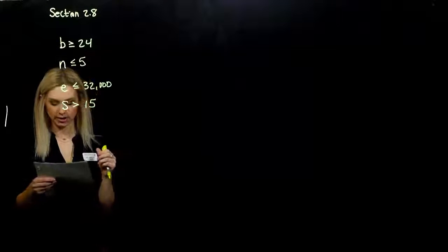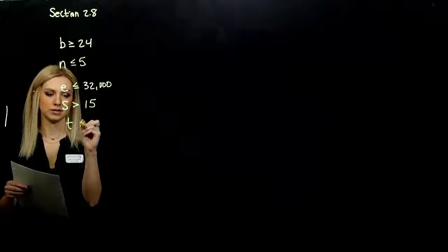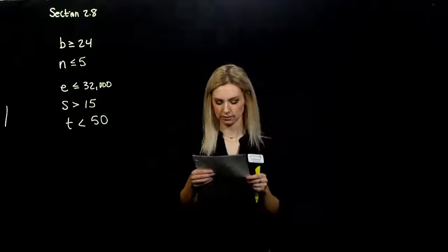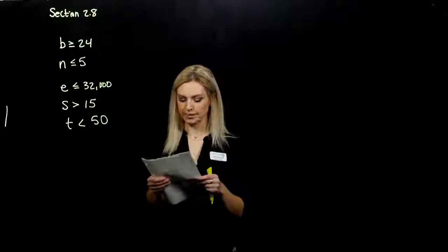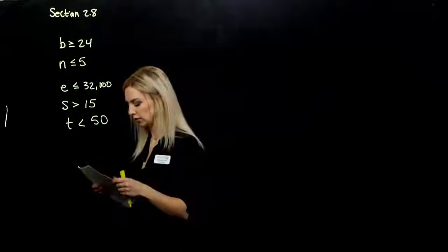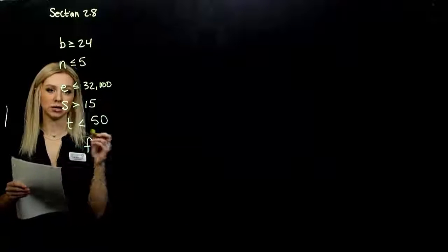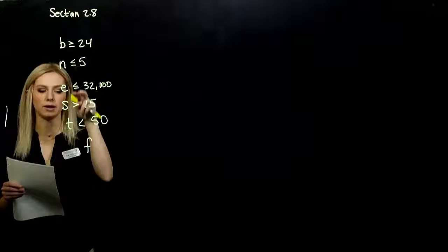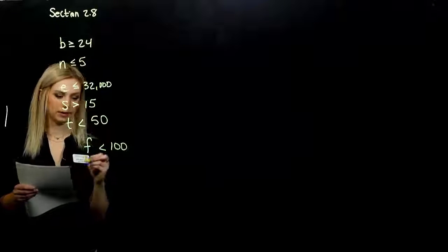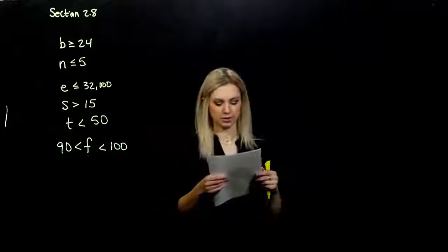Is less than. Tucker's weight is less than 50 pounds. So T is less than 50. He's not equal to 50, he's less than 50 pounds. Is between. This one's a little bit different. So the film is between 90 minutes and 100 minutes long. So I have both an upper bound and a lower bound in this case. The film length is less than 100 minutes, but it's also greater than 90. So it has to be bound between those two.